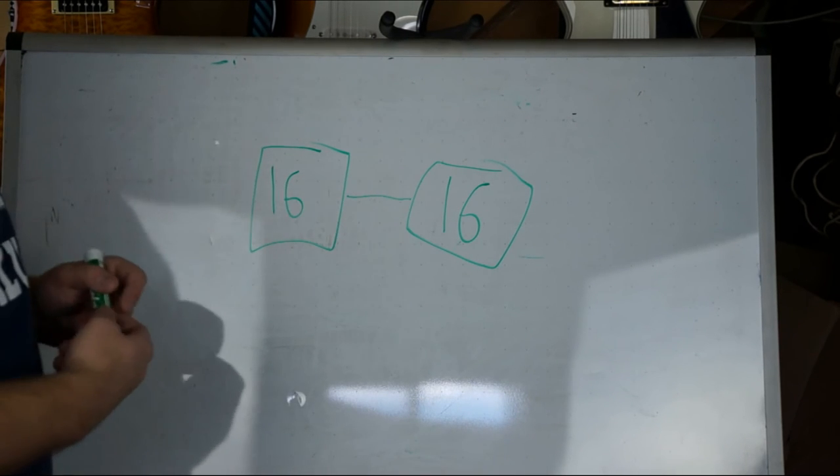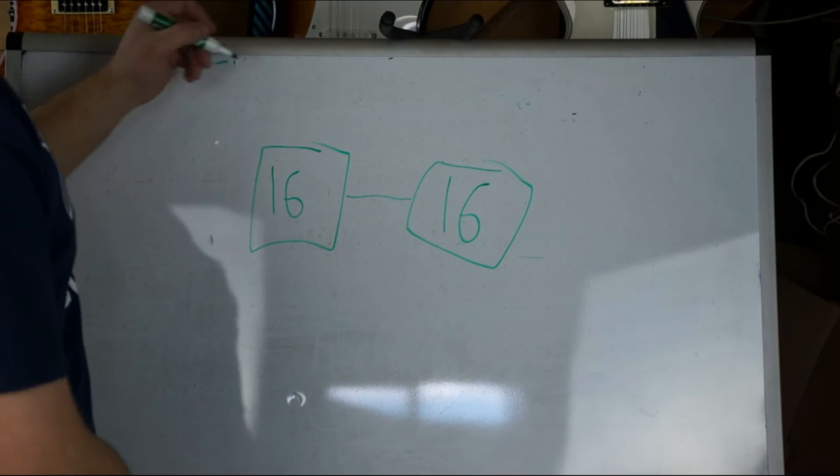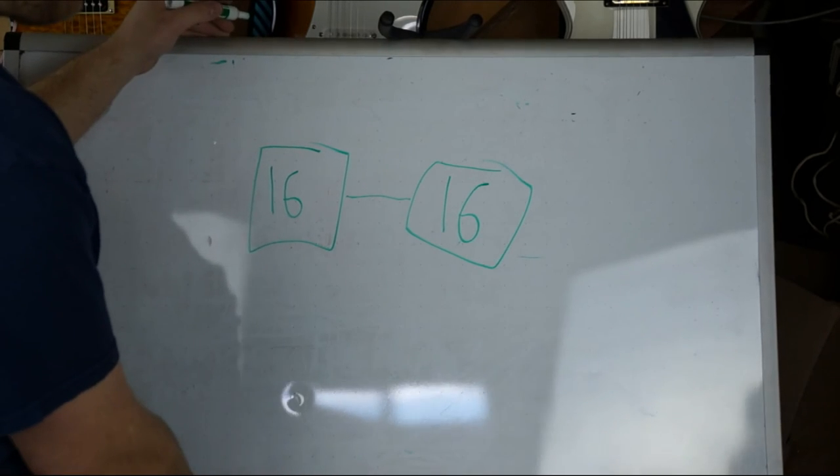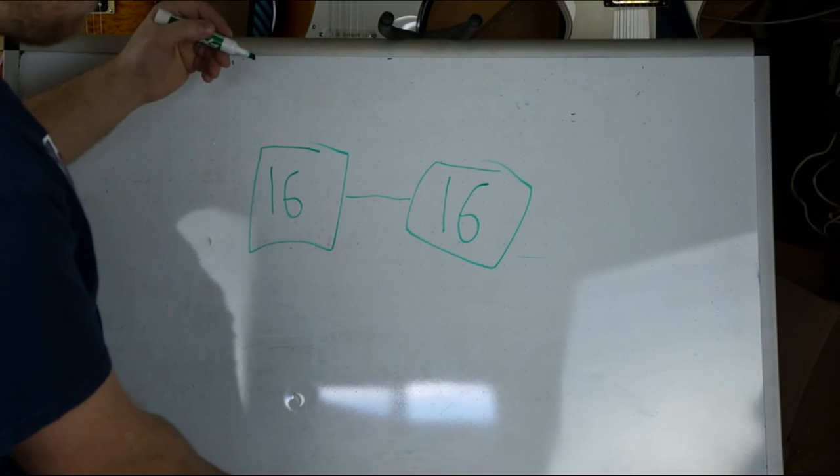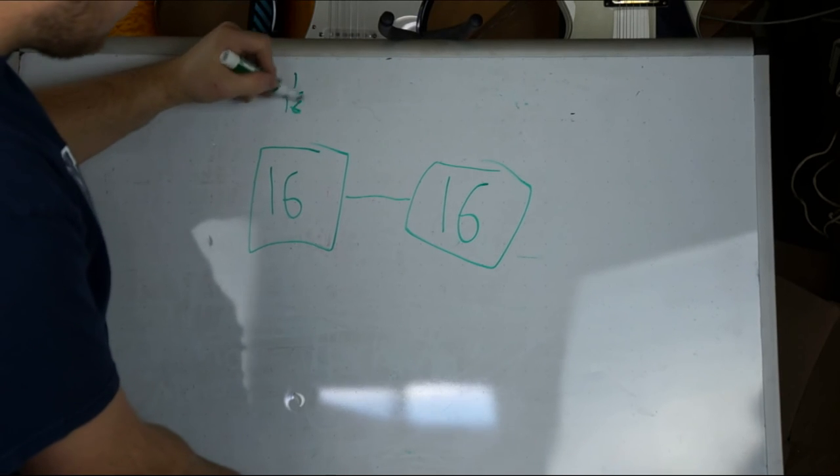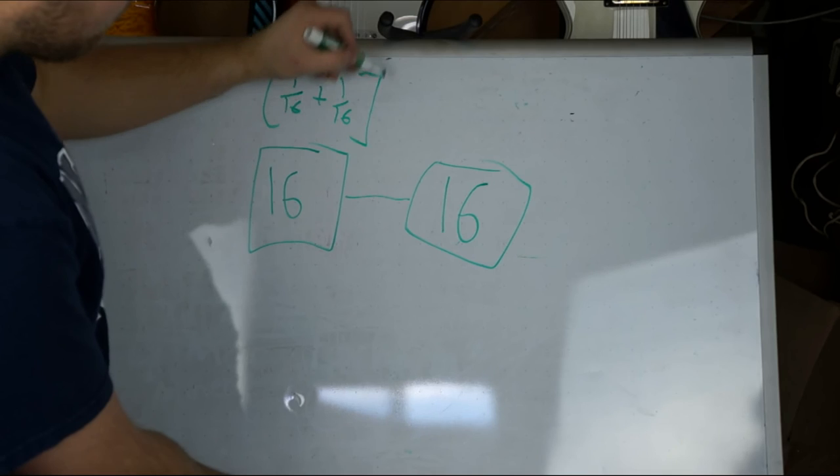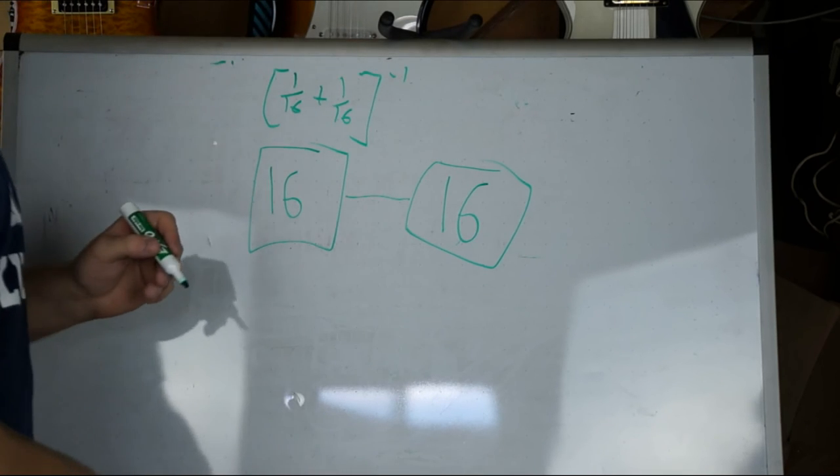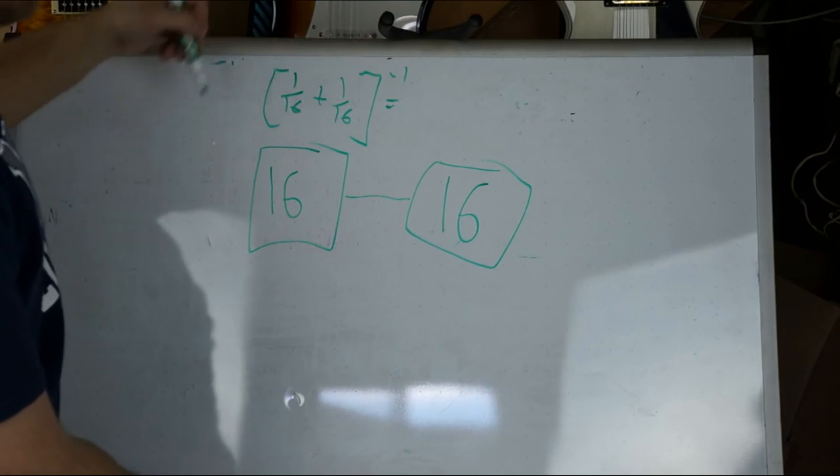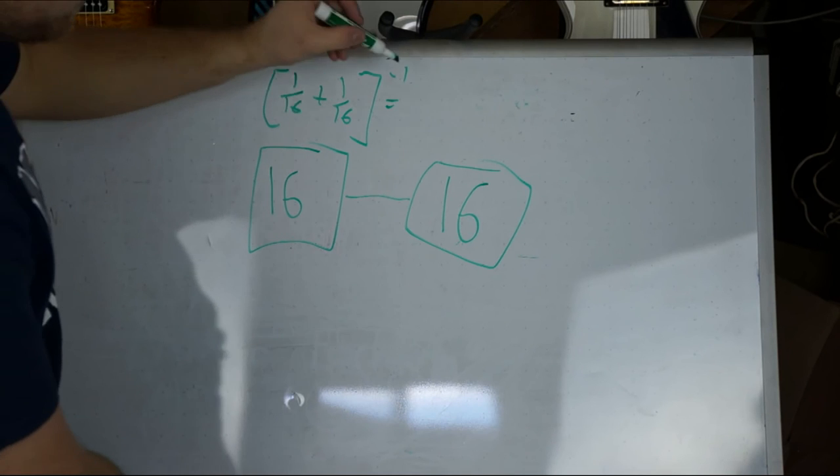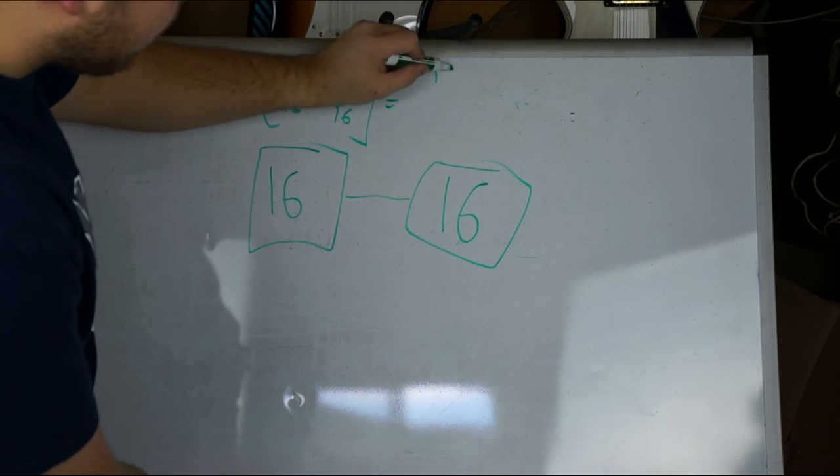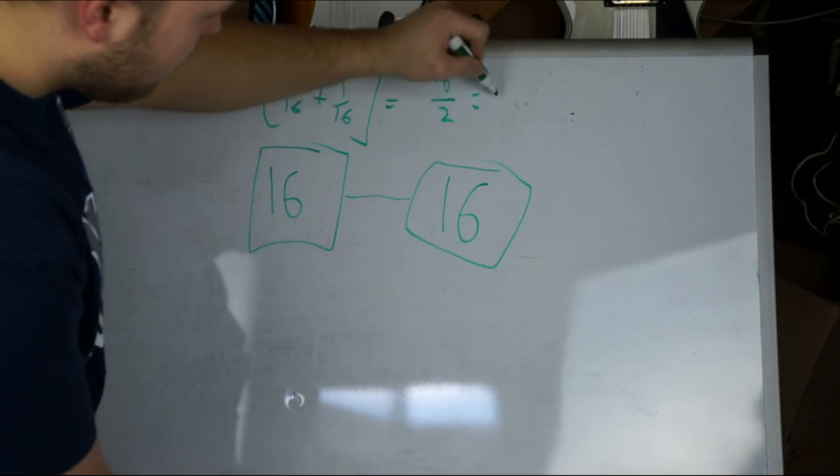So your total impedance is going to be 8, right? 1 over 16 plus 1 over 16 to the negative 1, which equals 2 over 16 to the negative 1. So 16 over 2 equals 8.